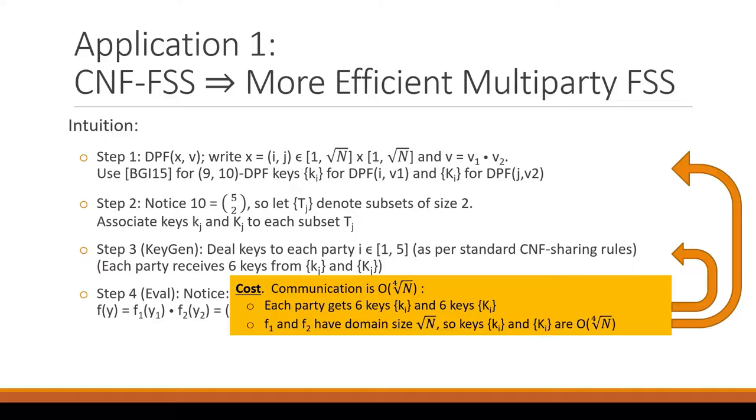And then a quick computation of the cost. This is the fourth root of N. This was because we split the domain into root N by root N. And so applying the BGI 15 key gen procedure on that picks up another quadratic factor. And so in the end, you get N to the one-fourth.